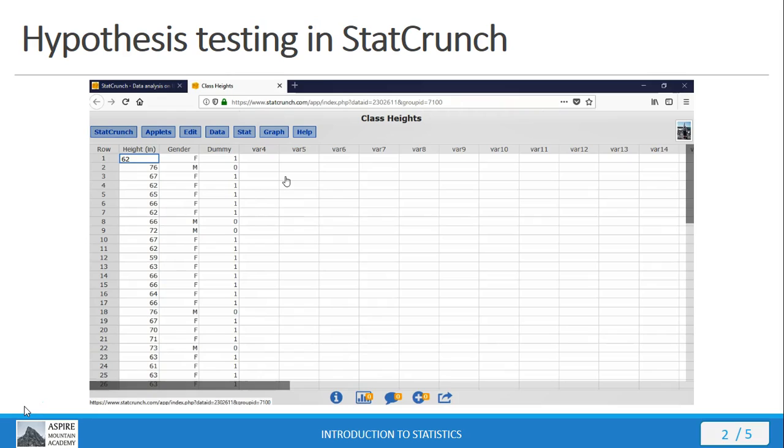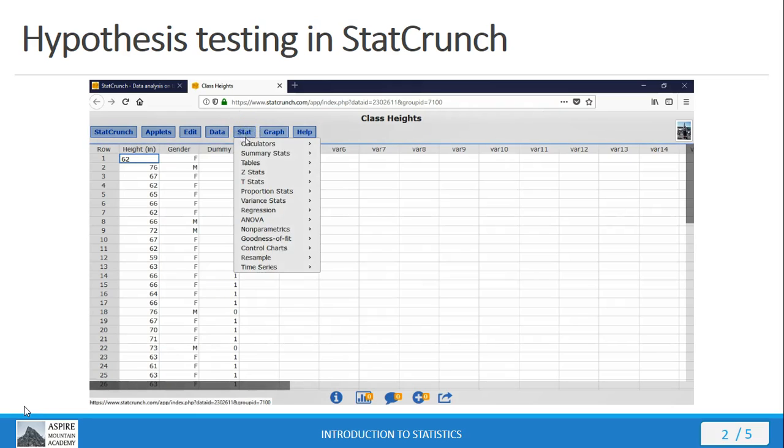So that same procedure that we followed when doing confidence intervals in StatCrunch, we're going to follow that same procedure for hypothesis testing. Let's say, for instance, we've got this data file and the claim is about the population mean, that the mean of the population is less than 66 inches. So, I go up to Stat and then the key question, to know whether to use Z-Stats or T-Stats, is the population standard deviation known? In this instance, we don't know anything about the population standard deviation. So, I'm going to use T-Stats, one sample because I've got just the one sample, with data because I have actual data.